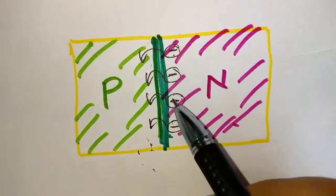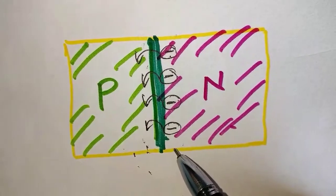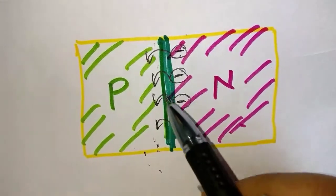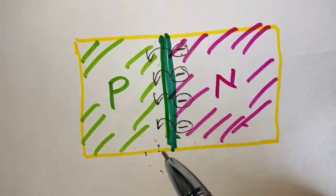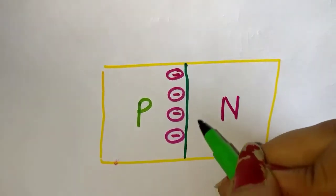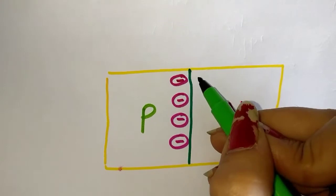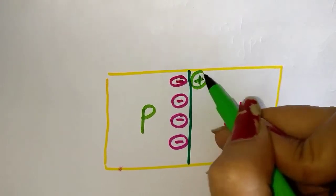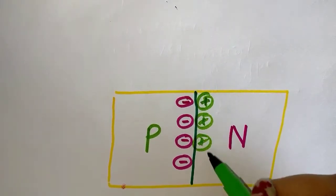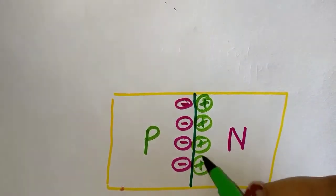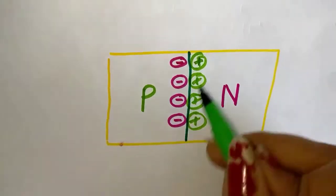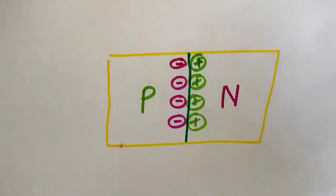The electrons from the n-side, which are near the junction, migrate towards the p-type. Due to this migration, the n-type gets a positive charge — that is, holes are left in the n-type. Hence, due to these charges, a depletion layer is formed near the junction.